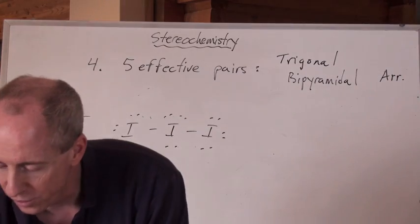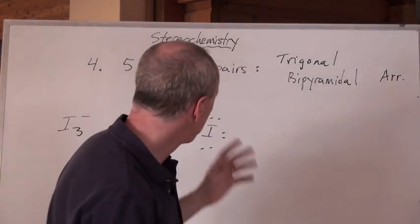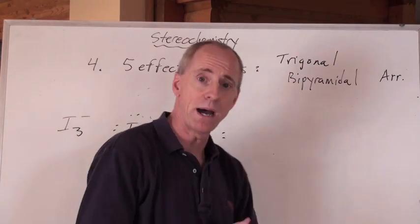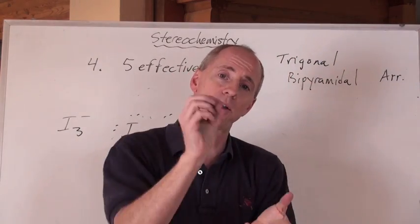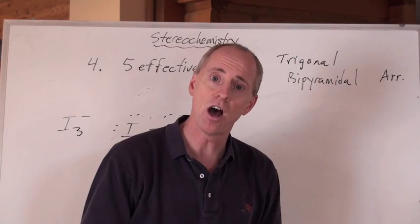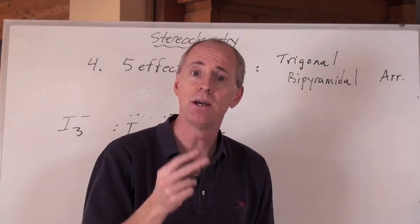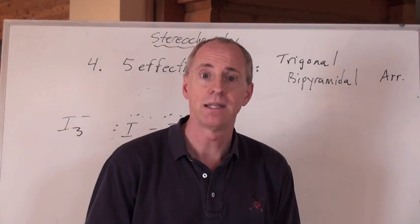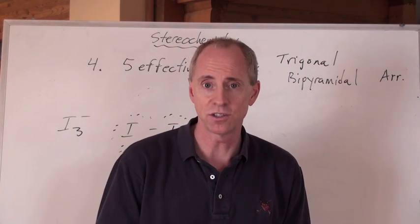So what are the names of the shapes for five effective pairs? You can have trigonal bipyramidal when you have five atoms around the center. If you have four around the center with that arrangement, you got seesaw. Three, you got T-shape. Two around the central one, and you got something that goes linear. And now there's one more arrangement to consider.